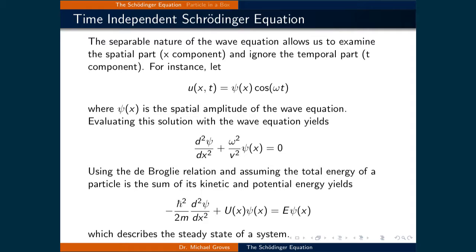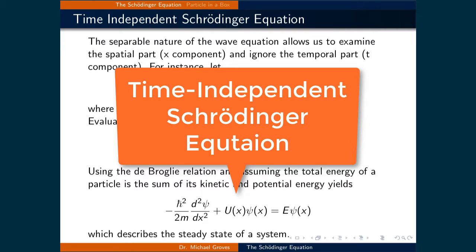If we plug this into the wave equation, then the time part can be multiplied out and we are left with d²ψ/dx² + ω²/v² ψ(x) = 0. Using the de Broglie relation and assuming the total energy of a particle is the sum of its kinetic and potential energy yields -ℏ²/2m × d²ψ/dx² + U(x)ψ(x) = Eψ(x).